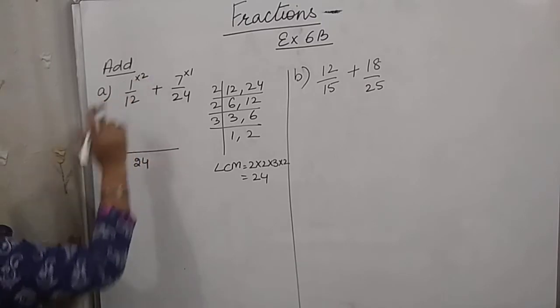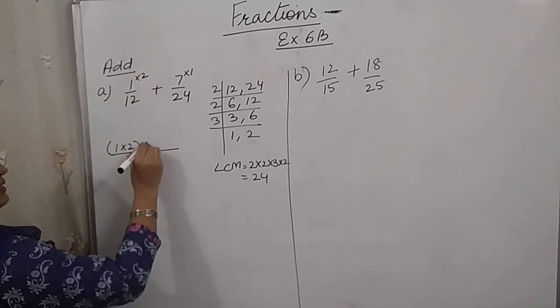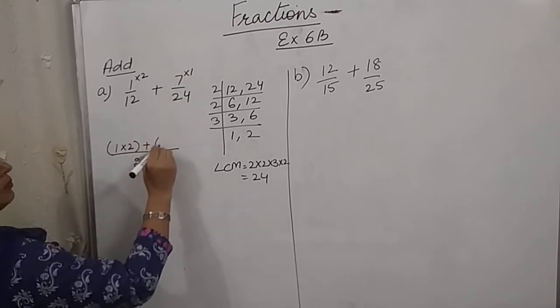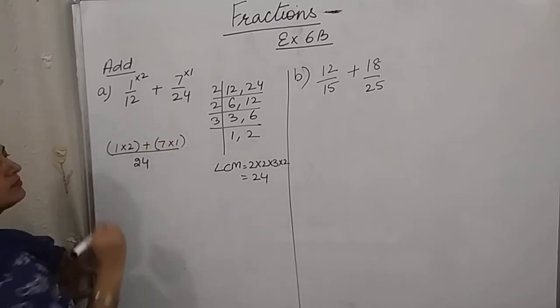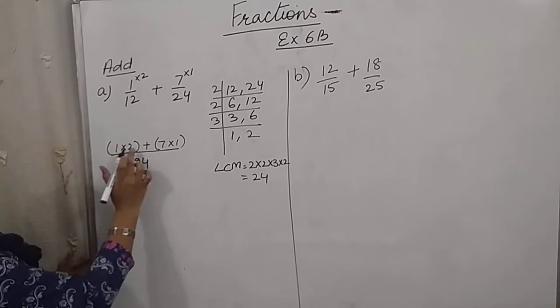And this 1 can be multiplied with this 2. Put it in bracket. And 7 can be multiplied with 1. So first we will be solving the bracket. 1 into 2 is 2.